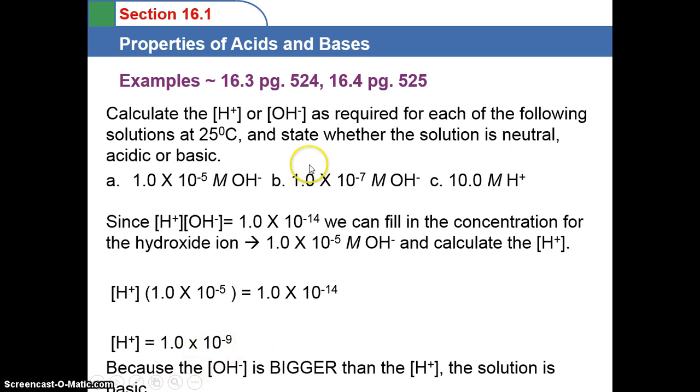The second part of the question says to state whether the solution is neutral, acidic, or basic. Because the OH- concentration is bigger, remember negative exponents mean smaller numbers, so the OH- concentration is 1 times 10 to the negative 5th, the hydrogen ion concentration is 1 times 10 to the negative 9th, so this one is actually larger.